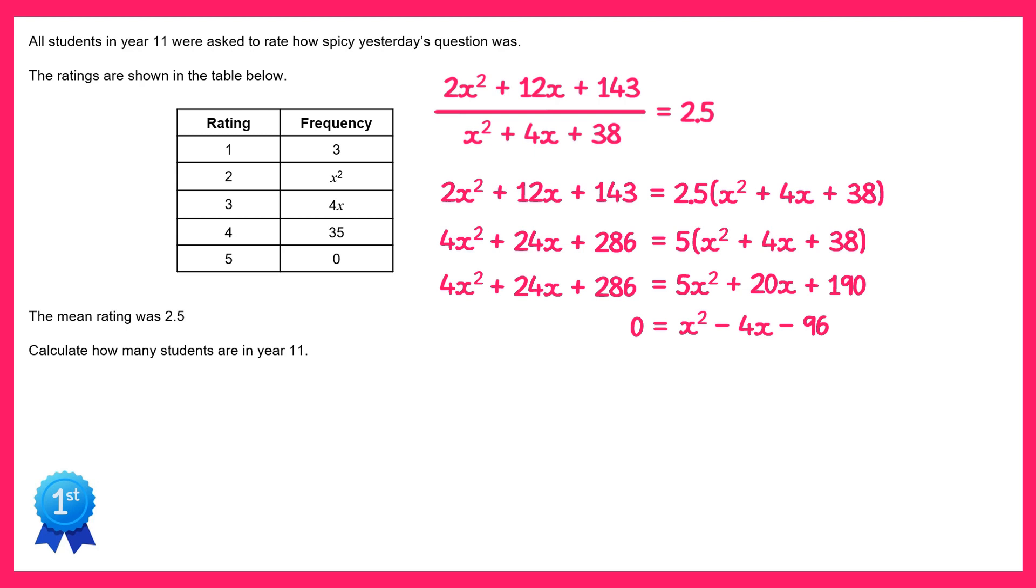We can now factorize the right hand side so we get 0 equals x plus 8, x minus 12, which gives you two solutions for x: x equals negative 8 and x equals positive 12.